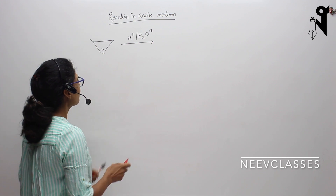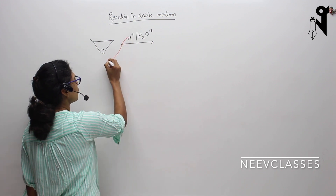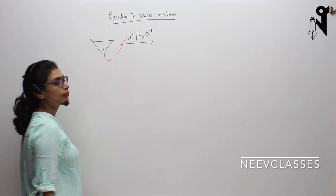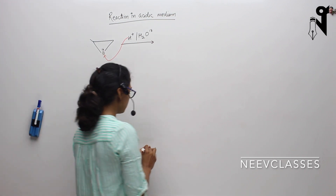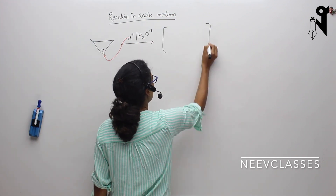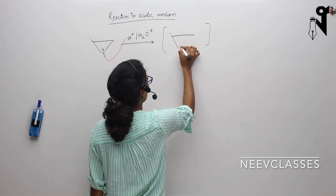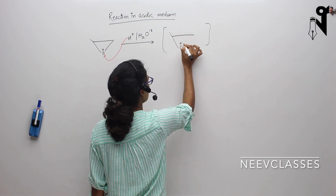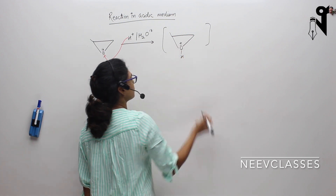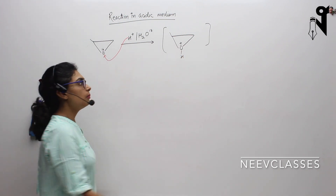What will happen here is this hydrogen will attack on this oxygen's lone pair and will form a molecule like this — a compound with this transition state.